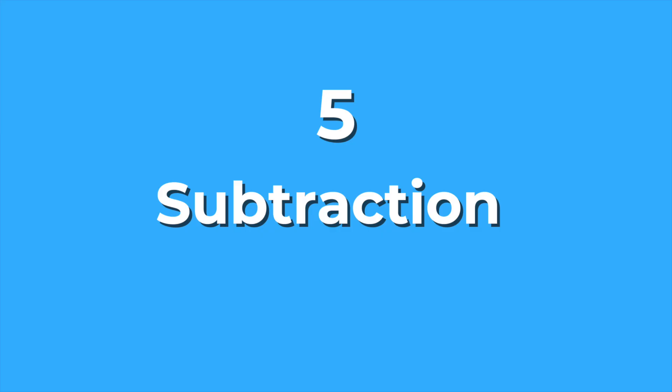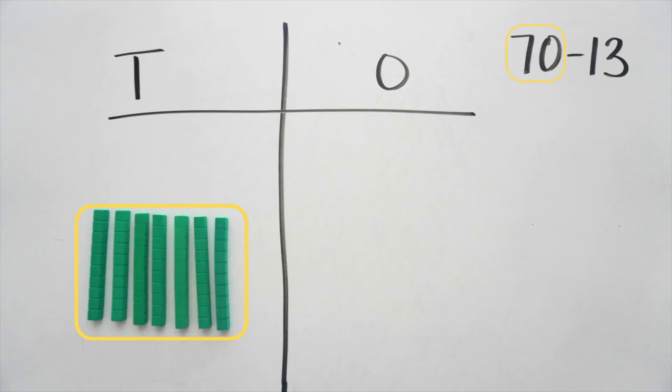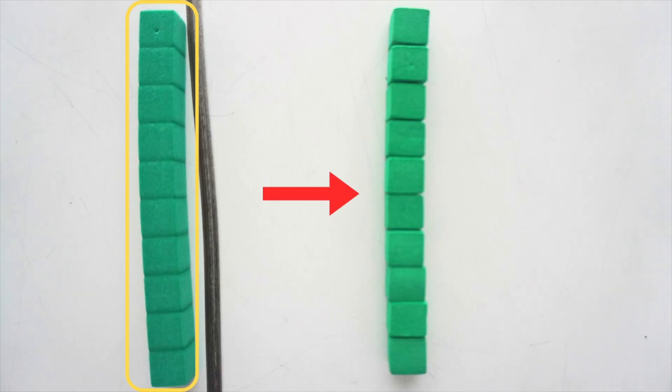Number five, subtraction. Base-10 blocks give students a clear way to understand regrouping when they don't have enough in a place to subtract.